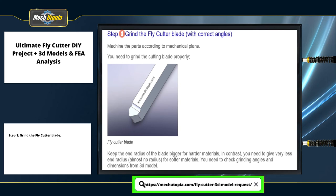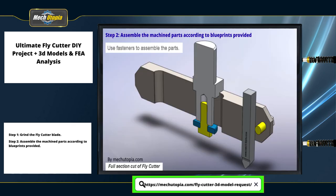Machine the parts according to the mechanical plans. You need to grind the cutting blade properly — use a larger end radius for harder materials, and a smaller end radius for softer materials. Check all grinding angles and dimensions from the 3D model. Step 2: assemble the machined parts according to the blueprints provided, using the specified fasteners.